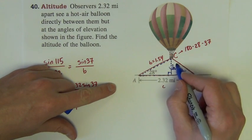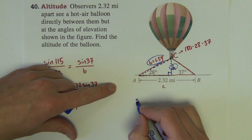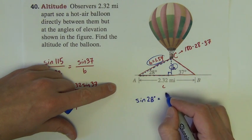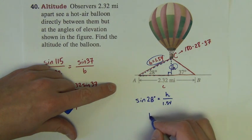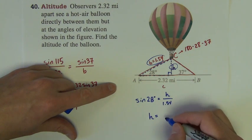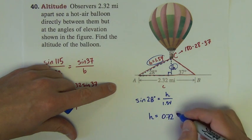We've got, looking for opposite, we have hypotenuse. So, I would say that the sine of 28 equals opposite over hypotenuse. So, I just need to multiply together that 1.54 times the sine of 28, I get a height of 0.72 miles.